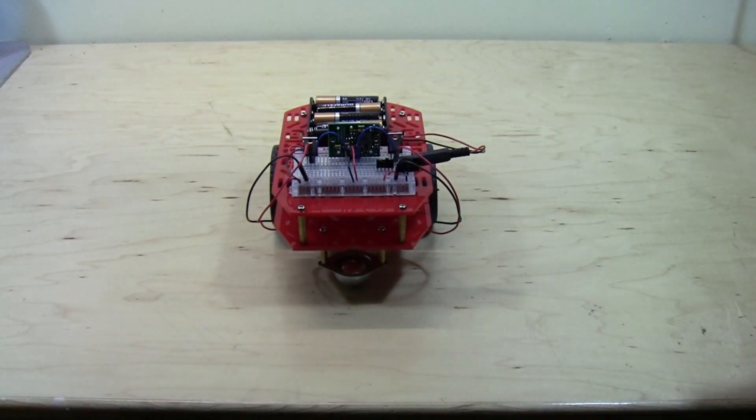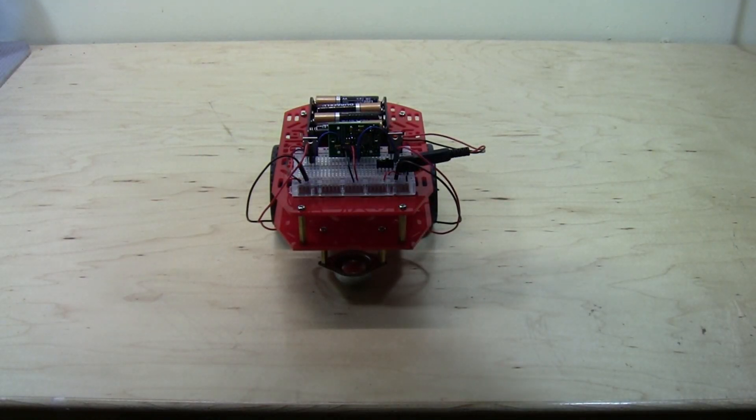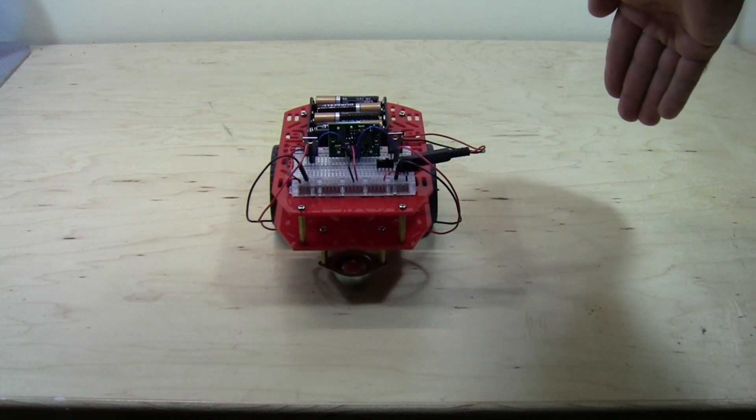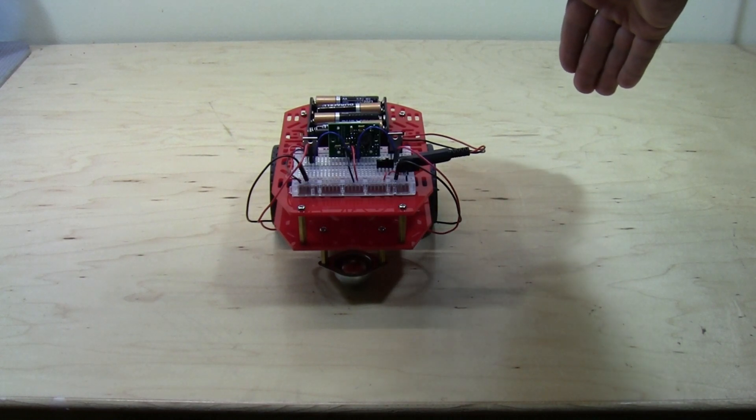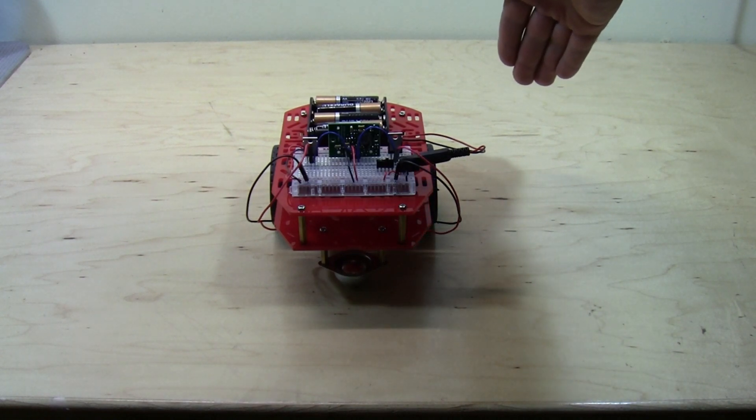If I reset the robot, you can see that the sensor is actually very sensitive. You do not have to be moving very fast, and it has a very wide field of view so it can easily detect your hand, even from the side.